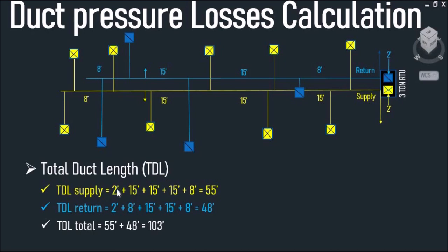Adding those numbers up: 2 feet plus 15 feet plus 15 feet plus 15 feet plus 8 feet gives us a total length of 55 feet for our supply side. And 2 feet plus 8 feet plus 15 feet plus 15 feet plus 8 feet gives us a total length of 48 feet for our return duct.